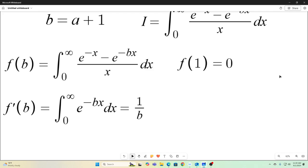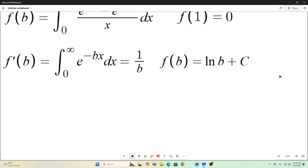So now we have a closed form expression for f prime of b. We integrate f prime of b to get back to f of b. So we have f of b is equal to the natural log of b plus c.